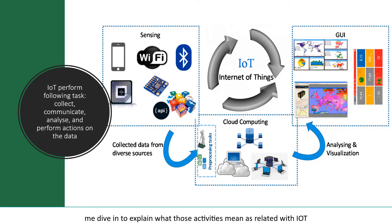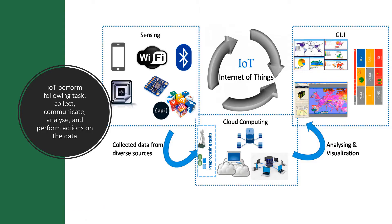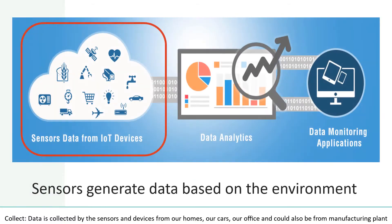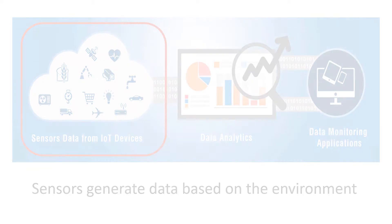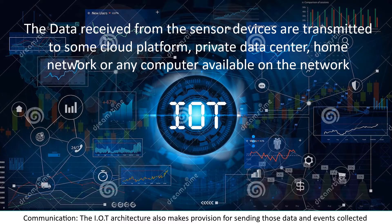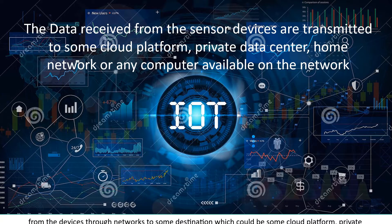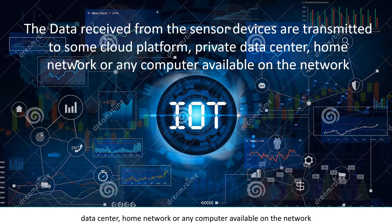Let me explain what those activities mean in relation to IoT. Collect: data is collected by the sensors and devices from our homes, our cars, our offices, and could also be from a manufacturing plant. Communication: the IoT architecture also makes provision for sending the data and events collected from devices through networks to some destination, which could be a cloud platform, private data center, home network, or any computer available on the network.